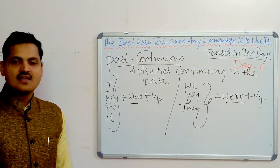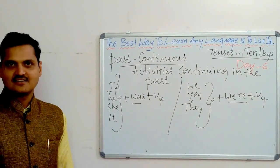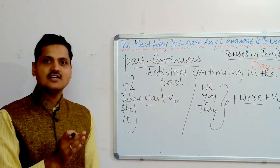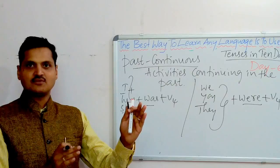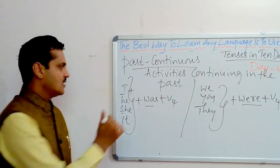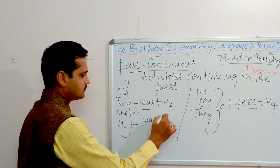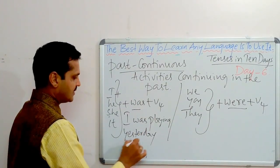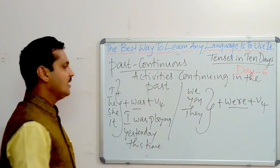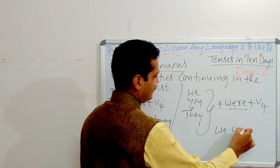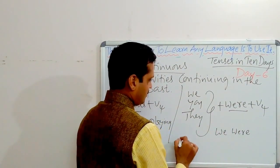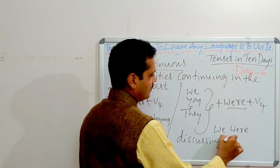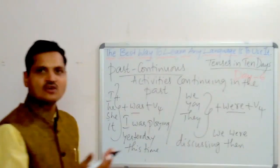Let me give you one example. 'I am teaching now' is present continuous tense. But yesterday at this time, if I am teaching you, it would be called past continuous — meaning the activity happening or continuing from one point of time to another point of time in the past. For example: 'I was playing yesterday this time.' Or 'We were discussing then,' meaning some point of time in the past.